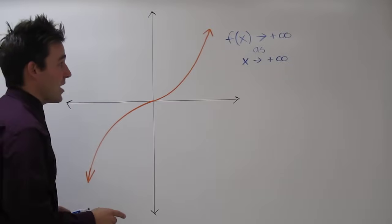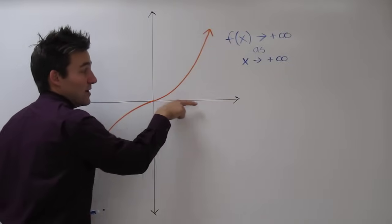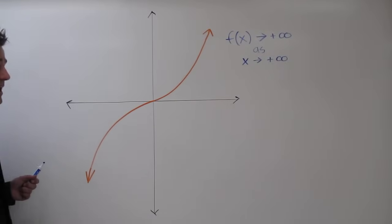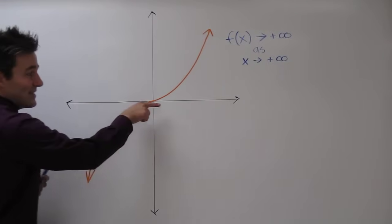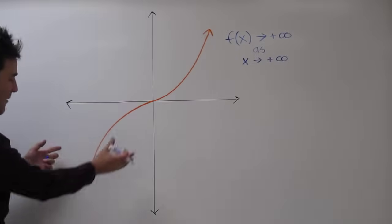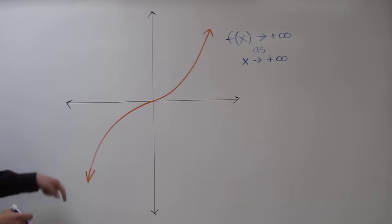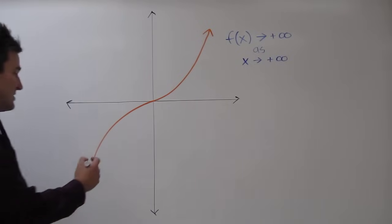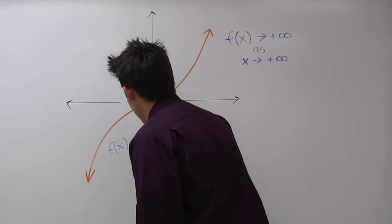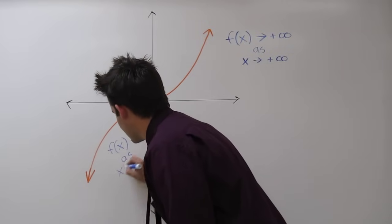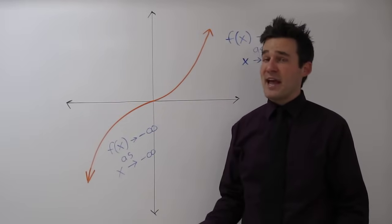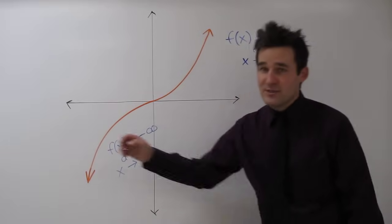What we've done now is describe what happens to the function as we continue going higher and higher on the x-axis. Now we need to describe the other side of the function. On this side, x is not increasing — x is actually decreasing. In this case, the function is going down. The way we describe that in math is: f of x approaches negative infinity as x approaches negative infinity. So the x-axis is going towards negative infinity, while the function is going down to negative infinity.